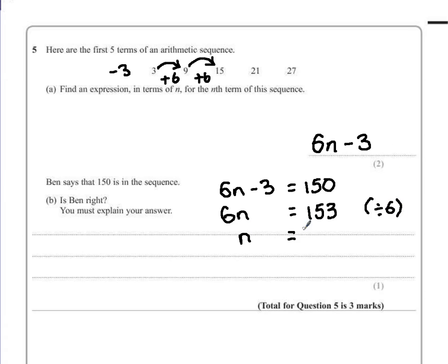We have space to be able to do this. So I'm going to use a bus stop method to divide 153 by 6. 6s into 1 is 0, carry the 1. 6s into 15 is 2, carry 3. 6s into 33 is 5 with 3 remainder.